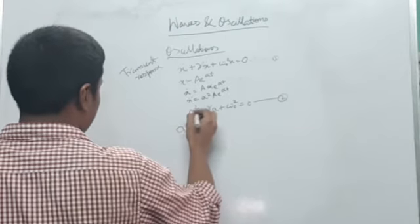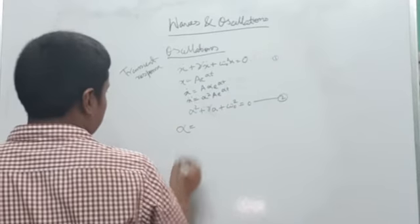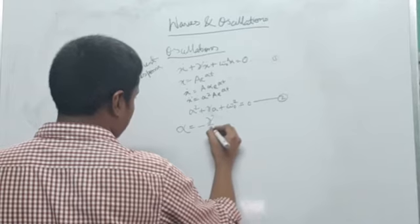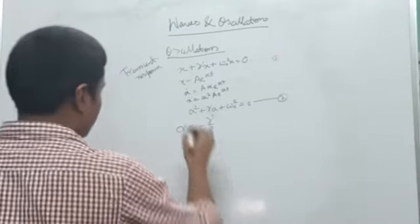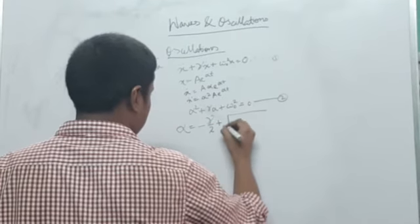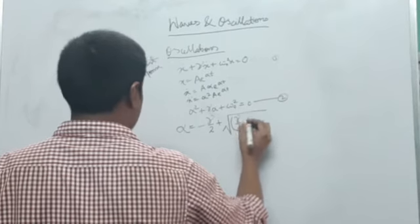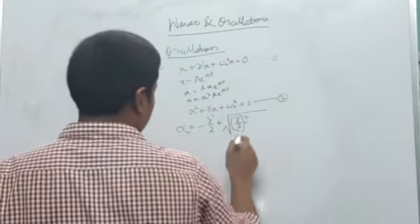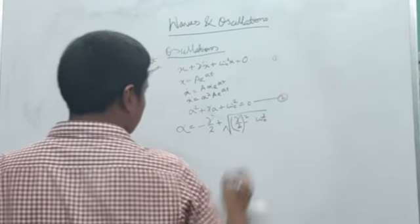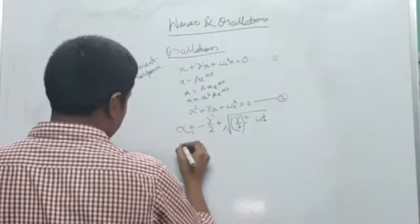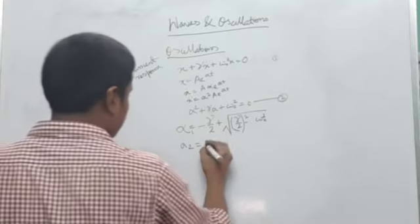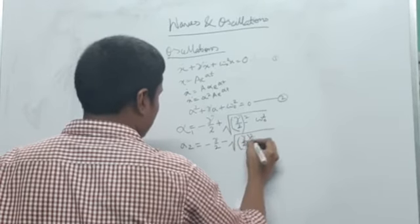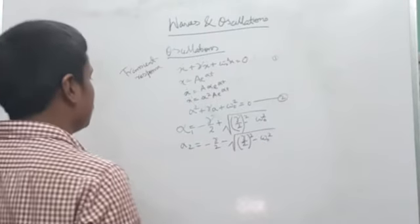Comparing with the standard form A·x² + B·x + C = 0, we have A = 1, B = gamma, and C = omega-naught squared. Using the quadratic formula, one solution is alpha equals minus gamma over 2 plus the square root of (gamma over 2) squared minus omega-naught squared. The other solution replaces the plus with a minus: alpha equals minus gamma over 2 minus the square root of (gamma over 2) squared minus omega-naught squared. These are the two solutions.